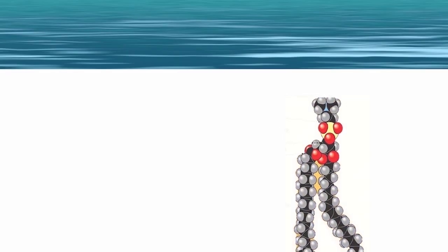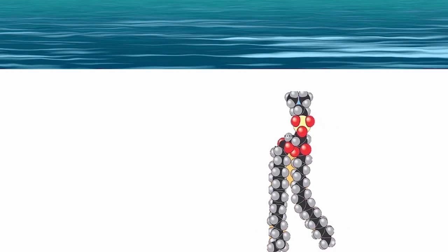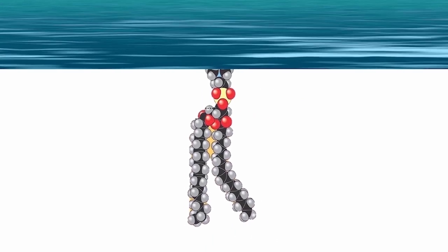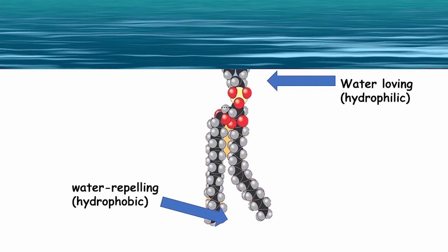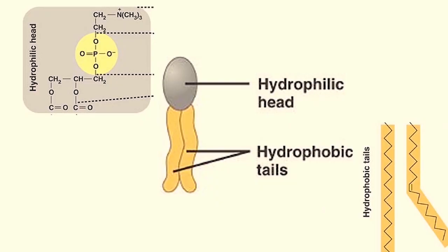Each phospholipid molecule consists of a hydrophilic head and two hydrophobic tails. The head contains a phosphate group which is polar and thus hydrophilic, while the tail contains fatty acid chains which are nonpolar and hydrophobic.